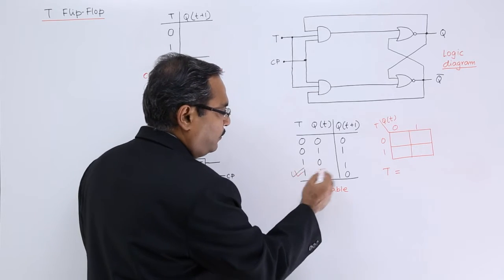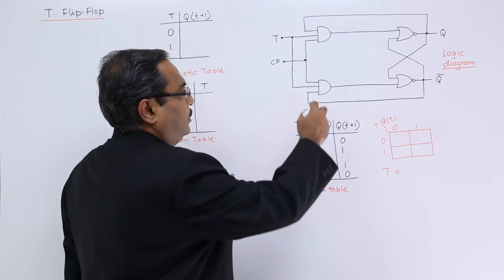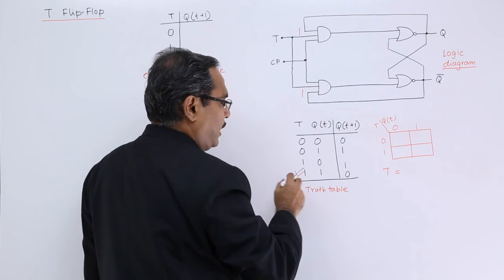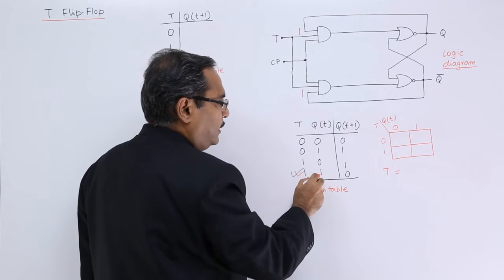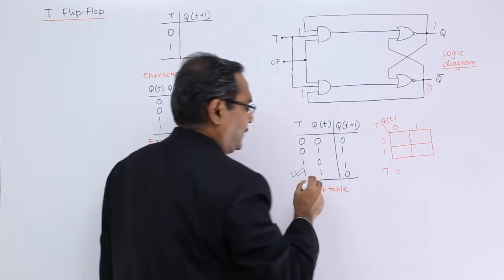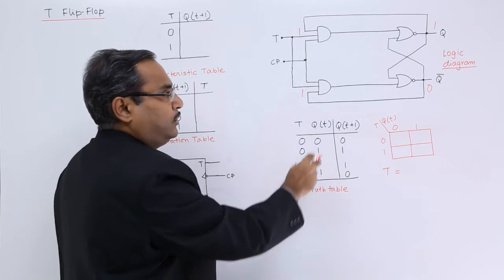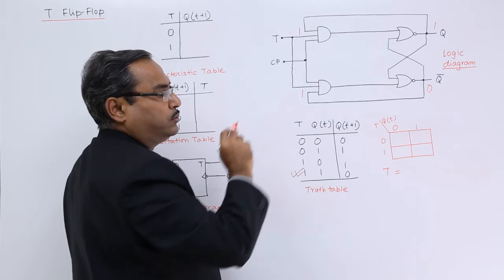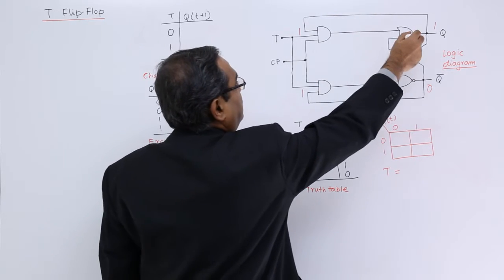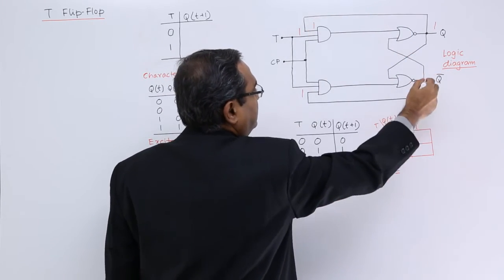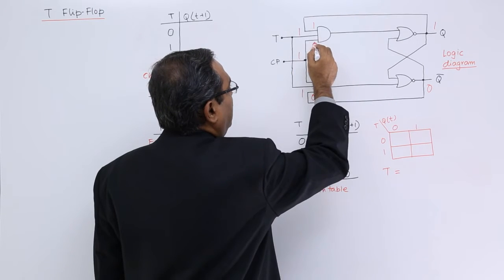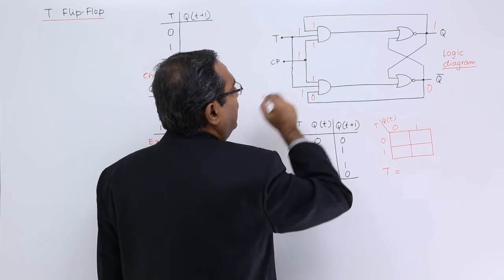Let us verify this. Here T is equal to 1, and Qt is equal to 1. So Q bar will be 0 in that case. This 1 is coming here and this 0 is coming down here. When the clock pulse is high, the AND gate inputs are getting high.